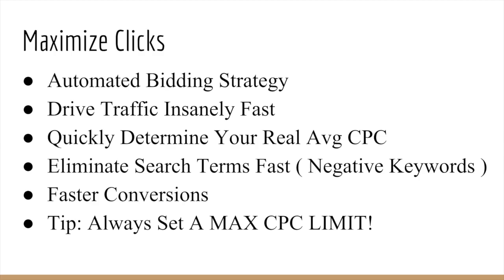With maximized clicks, you can quickly determine your real average CPC. For example, if you're using Keywords Everywhere or maybe Google's Keyword Planner, both of those tools will give you average CPCs for keywords — they might say your average CPC is going to be around $1.50 to $2. Well, with maximized clicks, you can quickly find out that your actual CPC for that same keyword might end up being $0.63, $0.75, or $0.80, which is your real average cost per click.